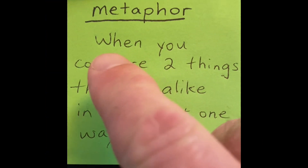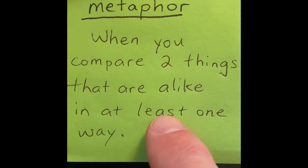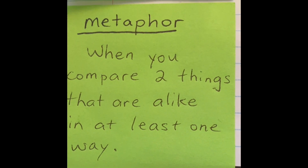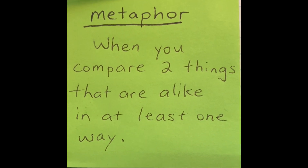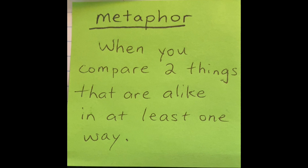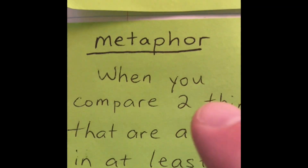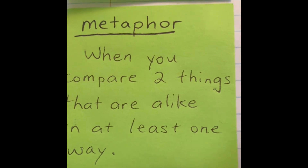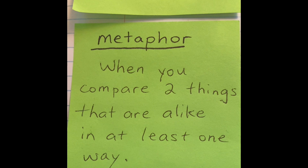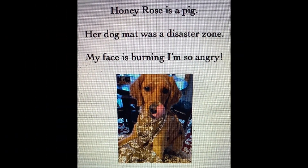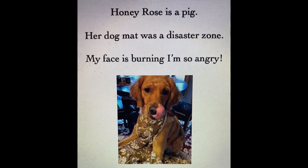For your post-it note, the definition will say: when you compare two things that are alike in at least one way. Maybe pause the video here so you can get this copied into your notebook — it's the fourth post-it note. A metaphor — notice I left off the words 'like' or 'as,' because that would be a simile. It's just when you compare two things alike in at least one characteristic. The three sentences I put down here are metaphors — notice they don't use the word 'like' or 'as.'